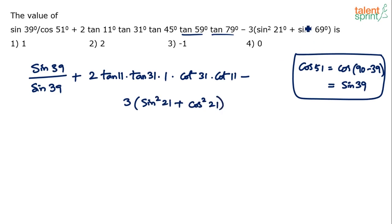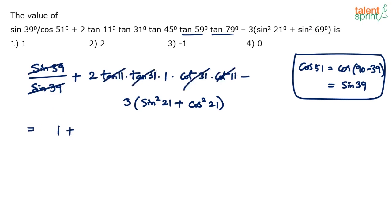For the last term, sin69 = sin(90-21) = cos21. So sin²69 becomes cos²21. Now simplifying: tan11·cot11 cancel (they are reciprocals), and tan31·cot31 also cancel. So the middle term simplifies to 2×1×1×1×1 = 2.